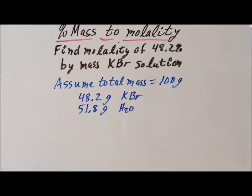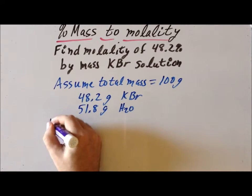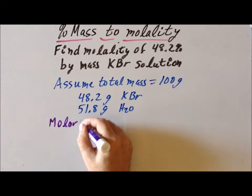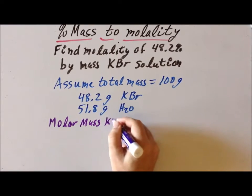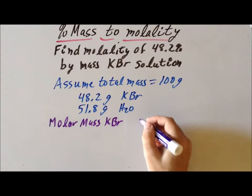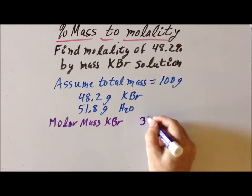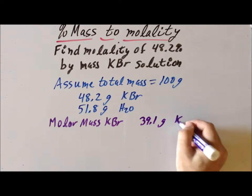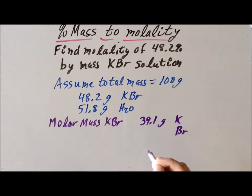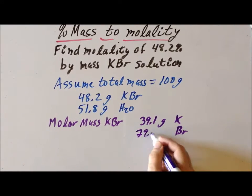The next step in our solution is to determine the molar mass of KBR. We know that the mass of potassium is 39.1 grams per mole. The molar mass of bromine is 79.9 grams per mole.